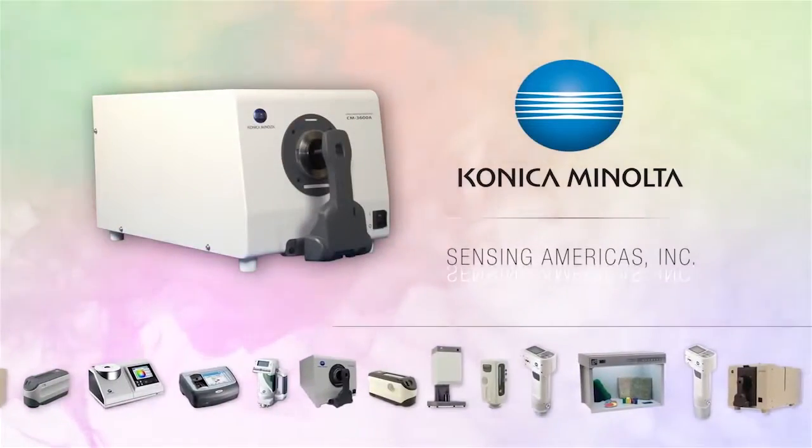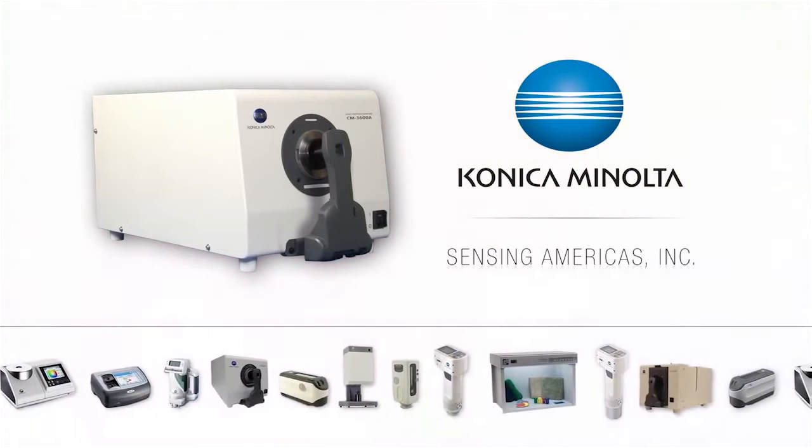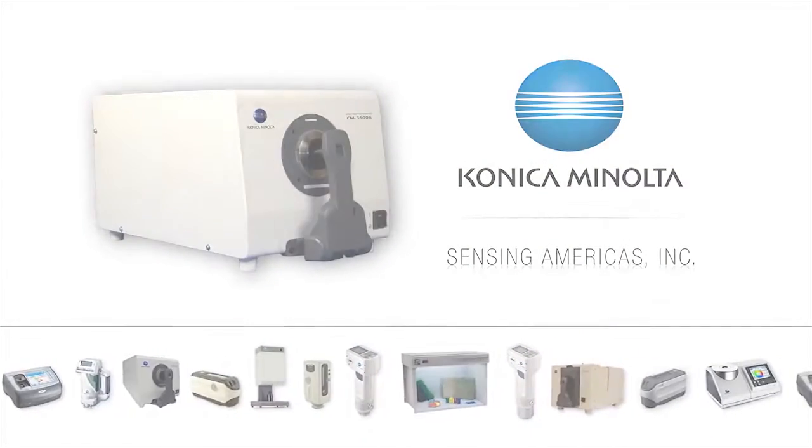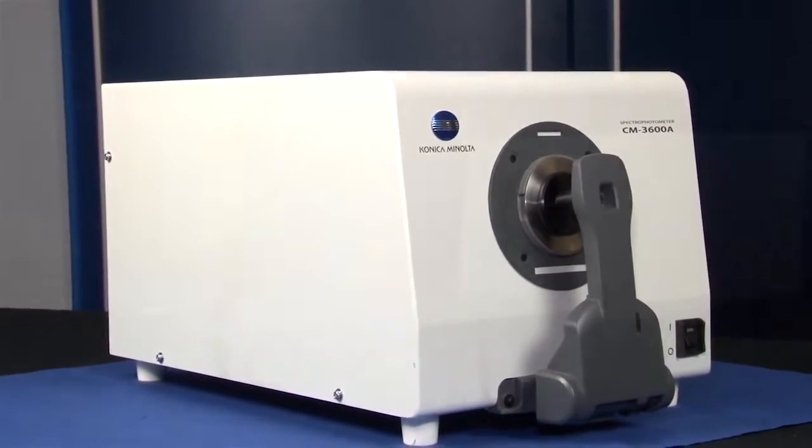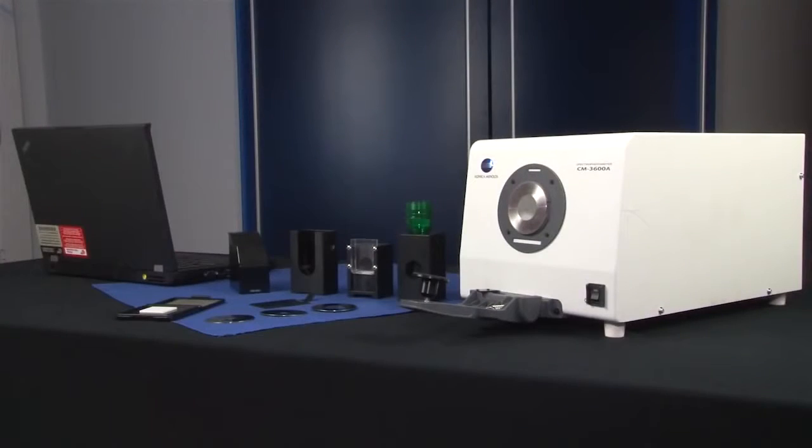Konica Minolta Sensing's CM3600A Spectrophotometer is a high-precision benchtop instrument designed to measure the color, UV, and relative gloss characteristics of opaque, transparent, and translucent materials.